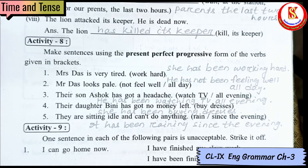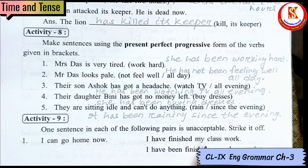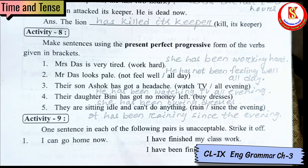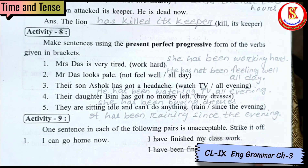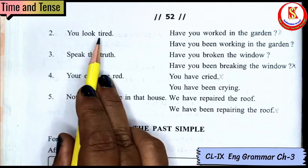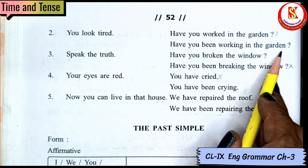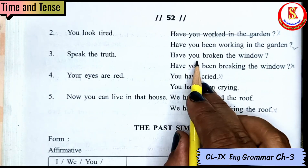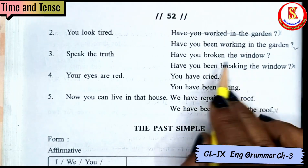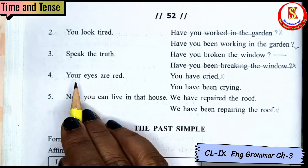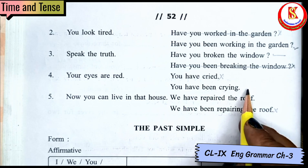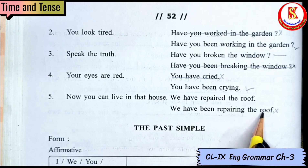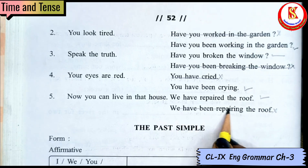Activity 9: We have two options and have to cross the wrong one. 'I can go home now' — correct: 'I have finished my classwork'; wrong: 'I have been finishing my classwork.' 'You look tired' — correct: 'Have you been working in the garden?'; wrong: 'Have you worked in the garden?' 'Speak the truth — have you broken the window?' correct; 'have you been breaking?' wrong. 'Your eyes are red' — correct: 'You have been crying'; wrong: 'You have cried.' 'You can live in that house' — correct: 'We have repaired the roof'; wrong: 'We have been repairing the roof.'